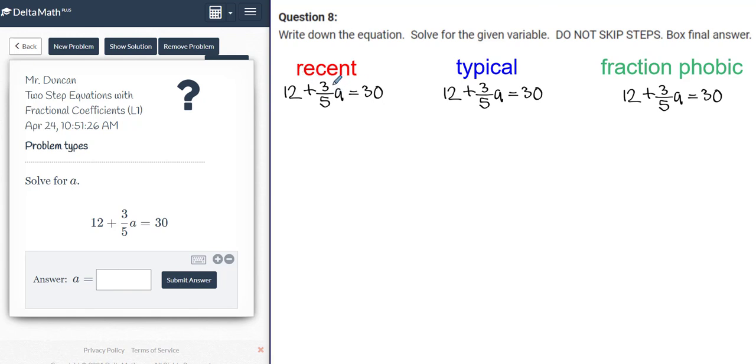So as of recently, this is my variable term, 3 over 5a. My first step is to get rid of this constant, so we'll subtract 12 on each side. And again, that's how I taught it this past week. That cancels. On the left side, I have 3 over 5a is equal to 30 minus 12.